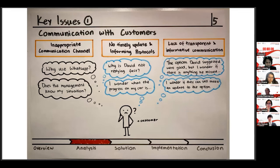So the first key issue is communication with customers. We can split it again to three sub-issues. There was inappropriate communication channel. There was no timely update and informing protocols. And lastly, lack of transparent and informative communication.